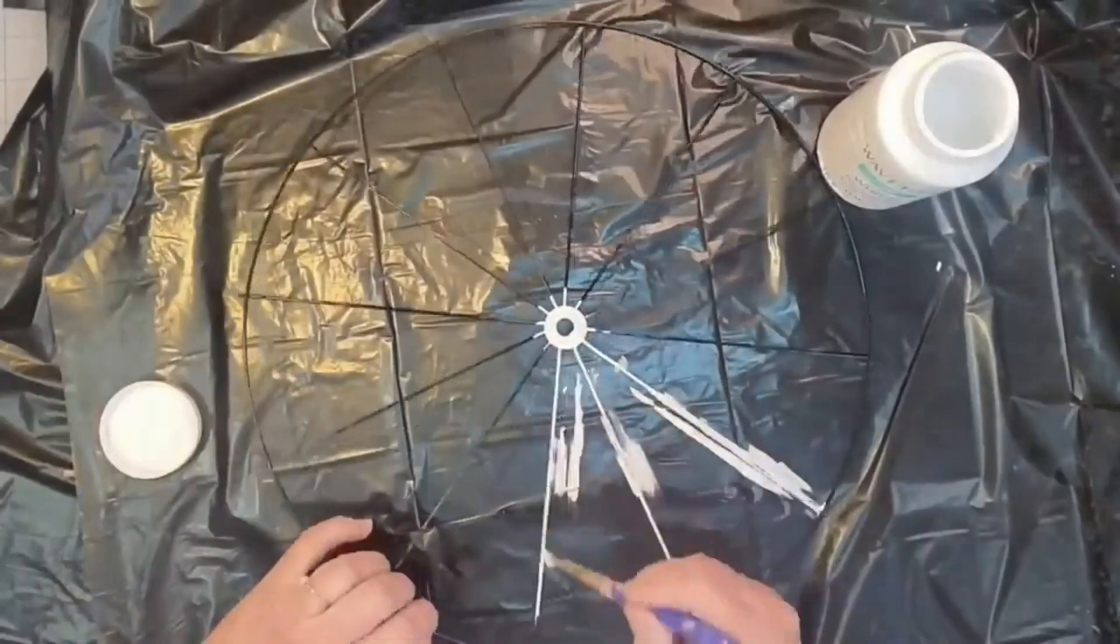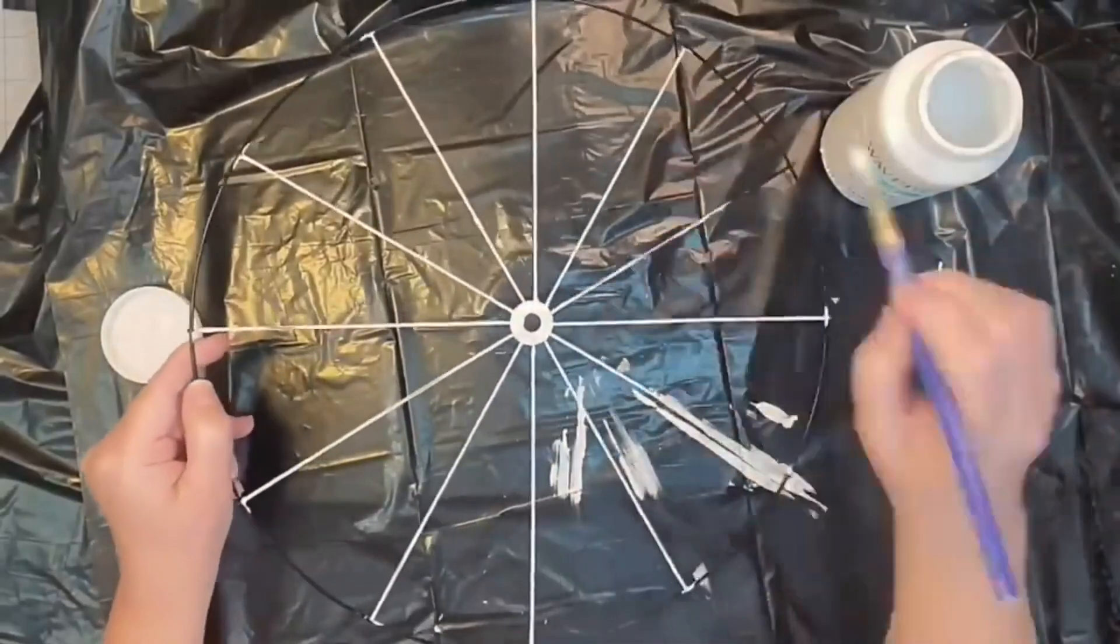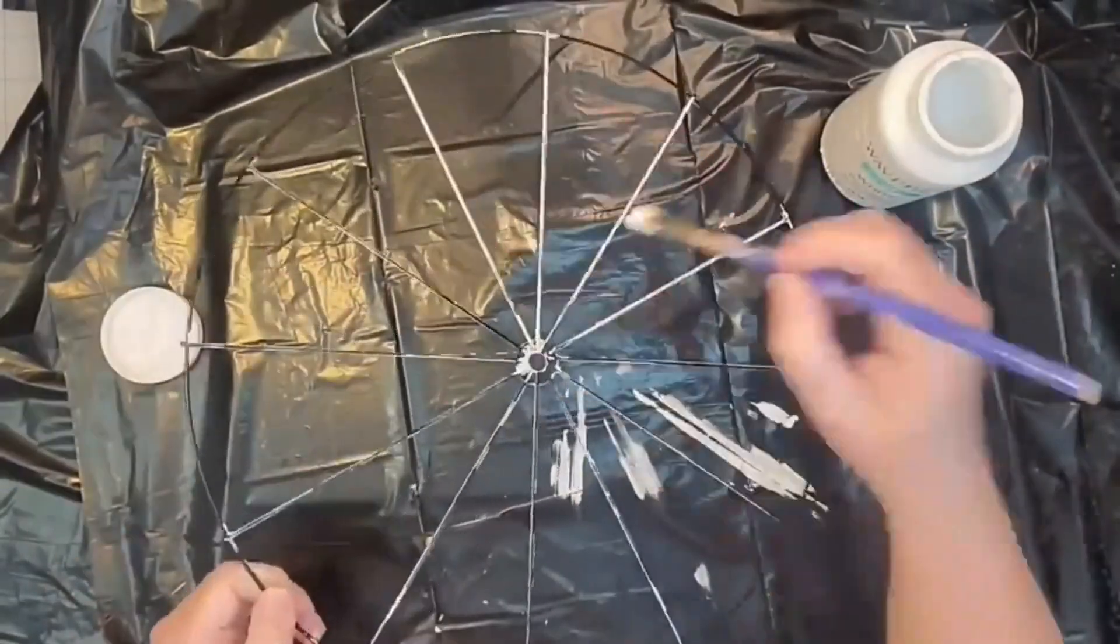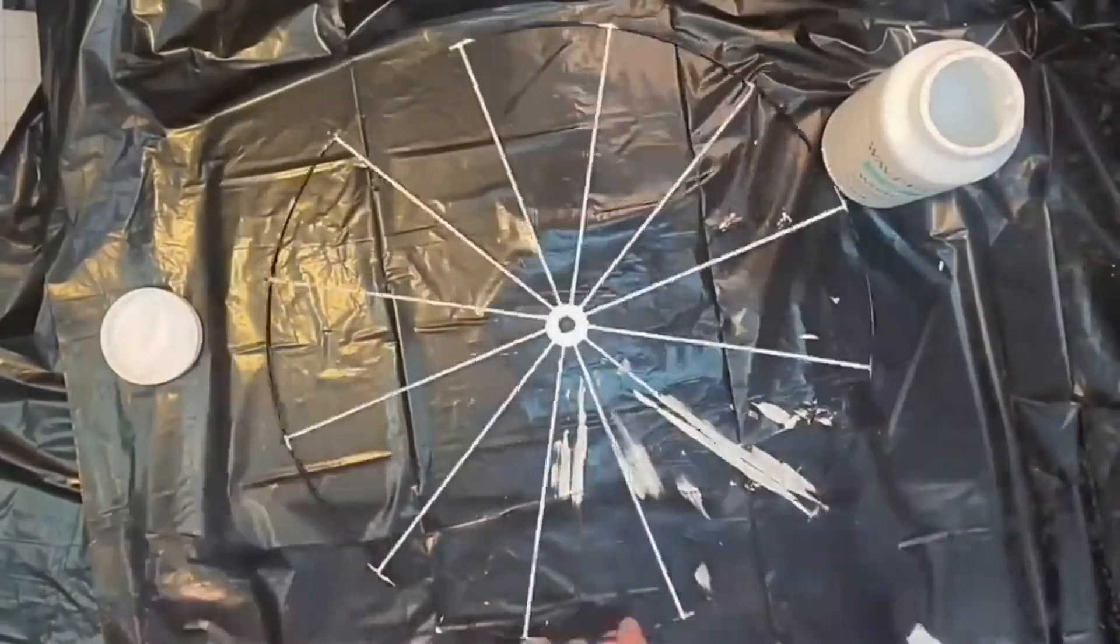So the first thing I'm going to do is go in and paint my spokes in the very center in my white Waverly chalk paint. I made sure that some of the areas were heavier than others and left some areas a little streaky so that it would look worn.